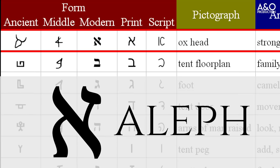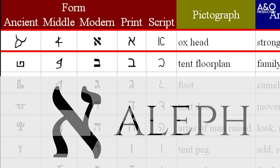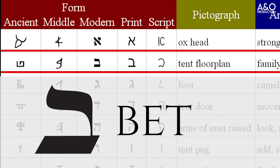Aleph, for example, the first letter of the Hebrew alphabet, can mean both ox or bull. Bet, the second letter of the Hebrew alphabet, represents the words house or tent. But in each case, the ideas represented by each of the letters are very closely related.